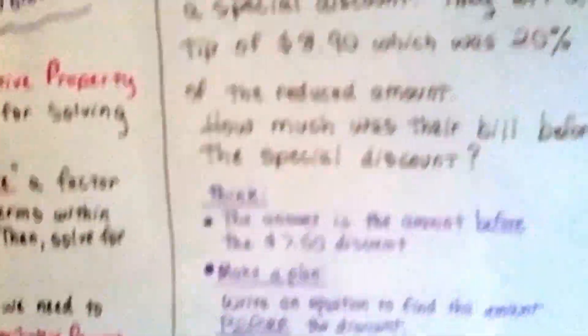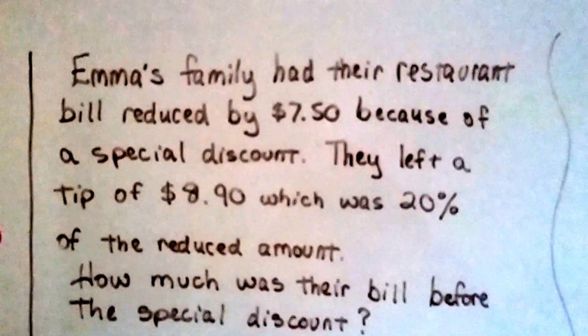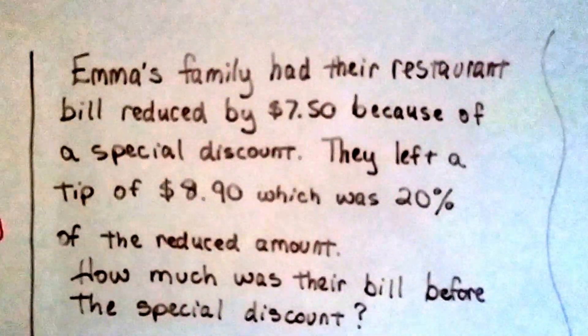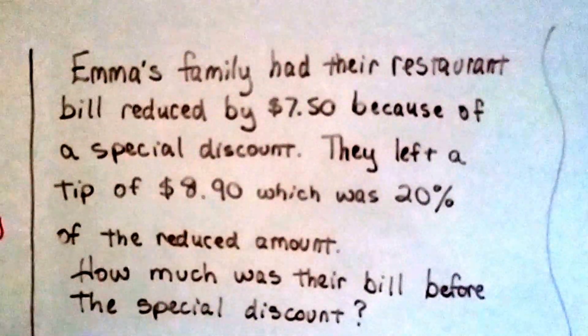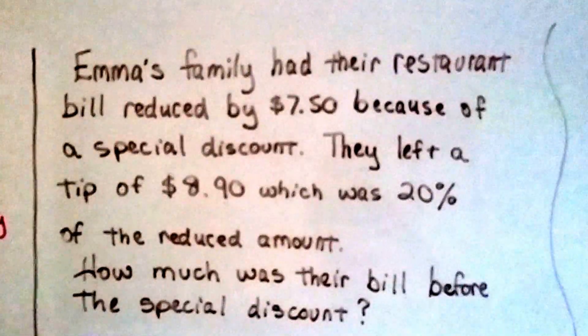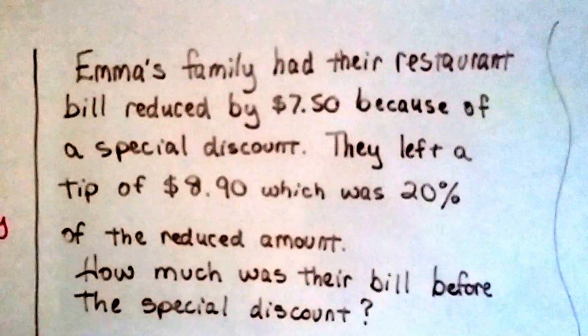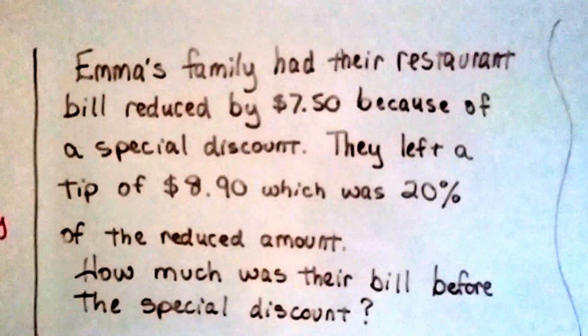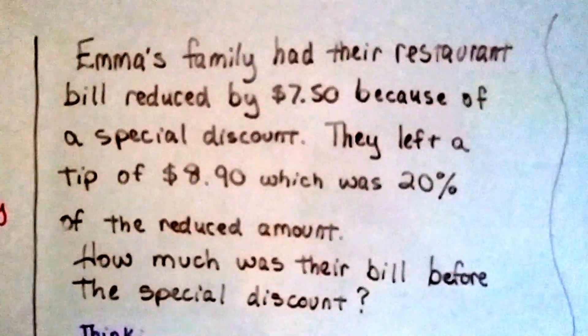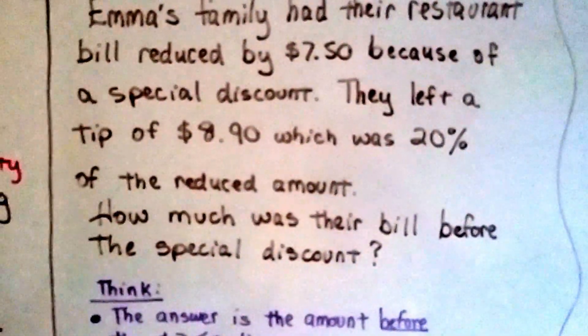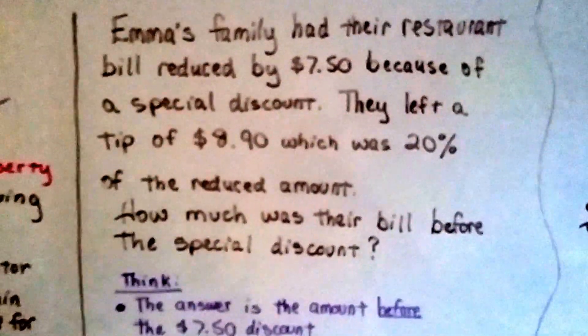So here's our real life problem. It's going to be a restaurant problem. Emma's family had their restaurant bill reduced by $7.50 because of a special discount. Maybe they had a coupon or something. They left a tip of $8.90, which was 20% of the reduced amount.